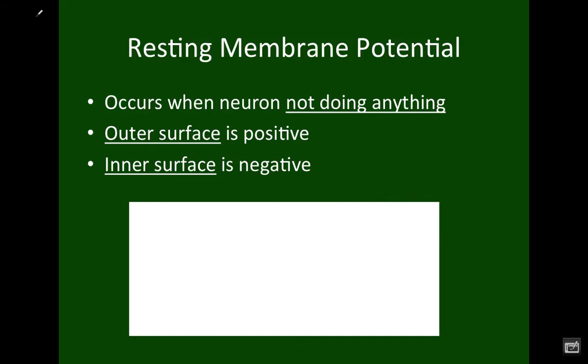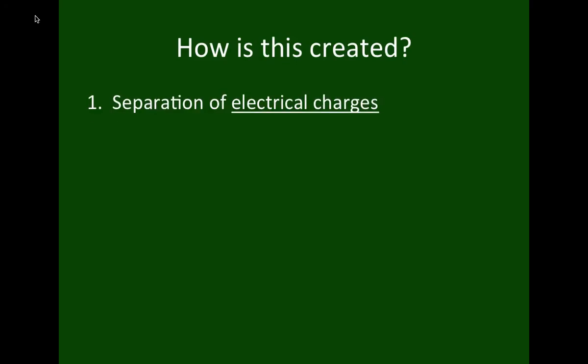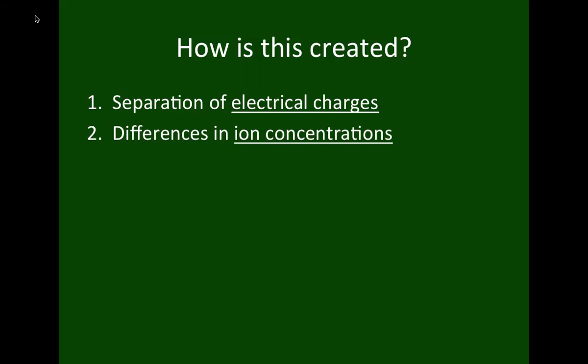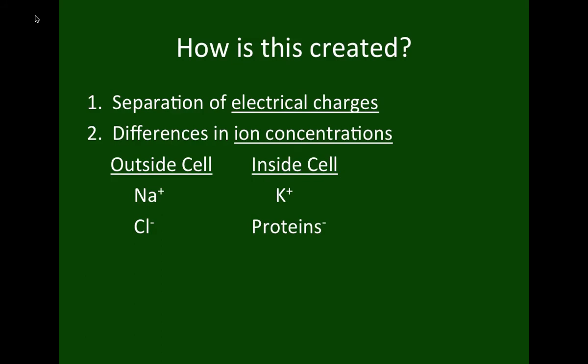How do we create this setup? First, we separate the electrical charges — the cell membrane keeps them apart. This difference is created because of ion concentrations. Outside the cell, sodium is our positive ion, and inside it's potassium. For negatives, chloride is on the outside and proteins are on the inside. It's the balance between sodium versus chloride and potassium versus proteins that sets up this differential.